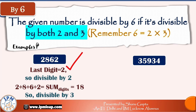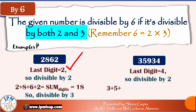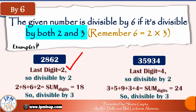For 35934: last digit is 4, so it's divisible by 2. Sum of digits is 3 + 5 + 9 + 3 + 4 = 24, which is divisible by 3. Since 35934 is divisible by both 2 and 3, it is therefore divisible by 6.